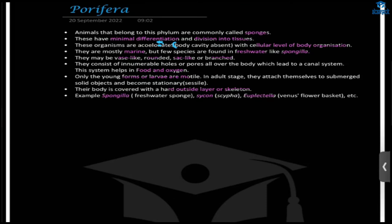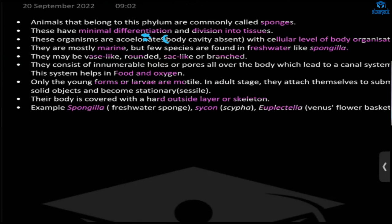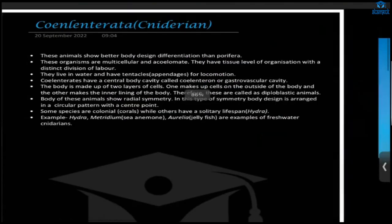In Porifera, larval forms are motile — they can move. Once they reach the adult stage, they attach to a solid object and become stationary, like a plant. Their body is covered by a hard skeleton. You should memorize at least two example names: Sycon and Spongilla.